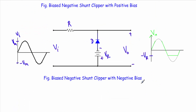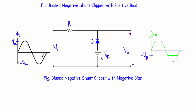Now I will show you the biased negative shunt clipper with negative bias. Here I am applying a sinusoidal voltage and we have a negative reference voltage. Since there is a reference voltage, I first have to indicate the transition voltage — the region in which the diode will be in forward bias and the region in which it will be in reverse bias. During the positive half cycle of the input voltage, this terminal will be positive and this terminal will be negative. The positive terminal of the input voltage is connected with the N side and the negative terminal with the P side. The negative terminal of the reference voltage is also connected with the N side and the positive terminal with the P side — so during the entire positive half cycle our diode will be in reverse bias.